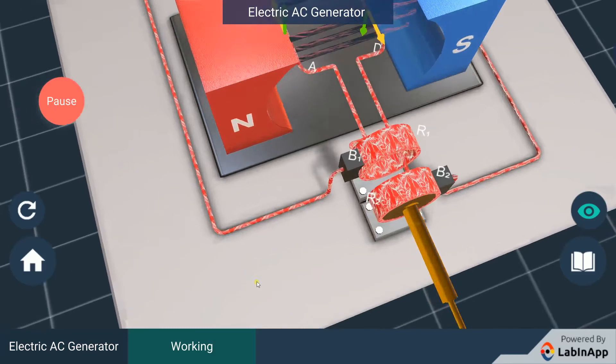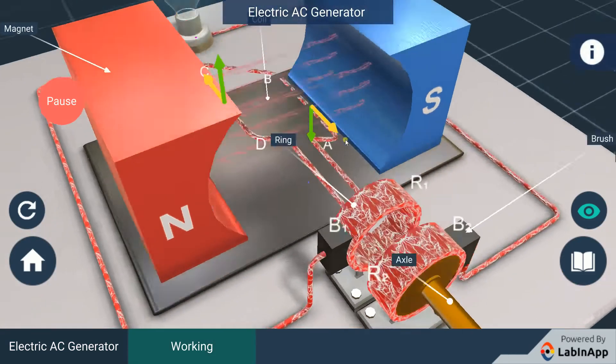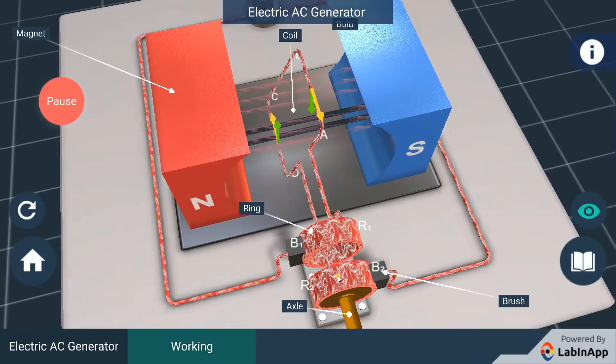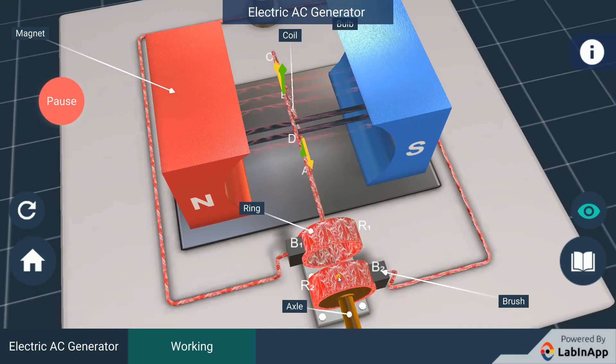The two ends of this coil are connected to the two rings R1 and R2. The inner side of these rings are insulated.